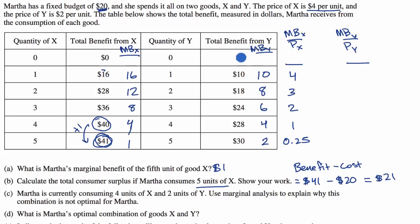For Y, the cost of Y is $2 per unit. So the marginal benefit per dollar of this first unit is $10 divided by $2, which is five. Eight divided by two is four. Six divided by two is three. Four divided by two is two. And two divided by two is one.